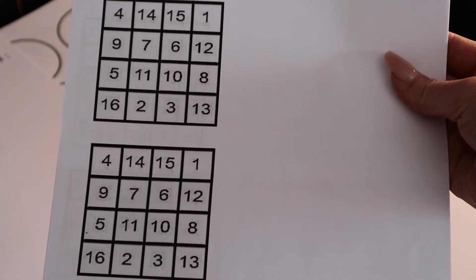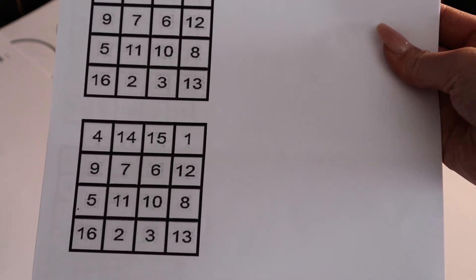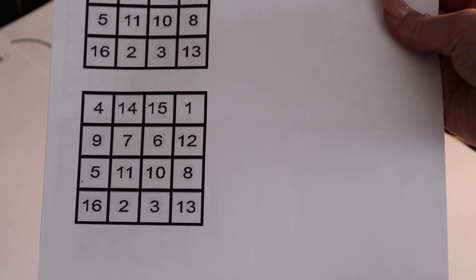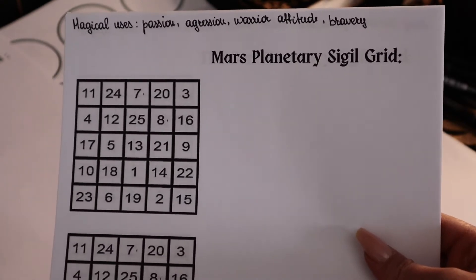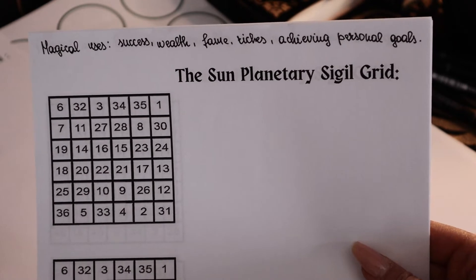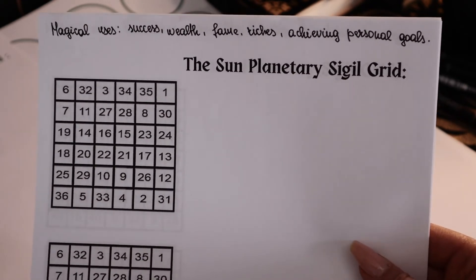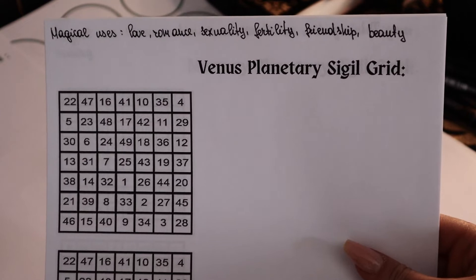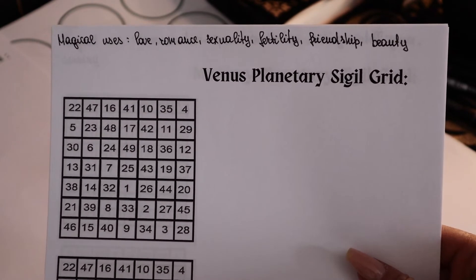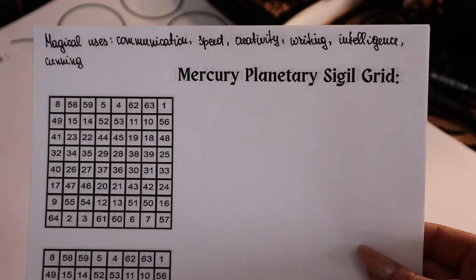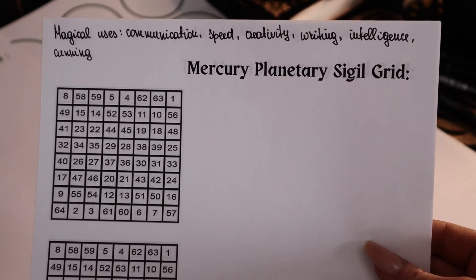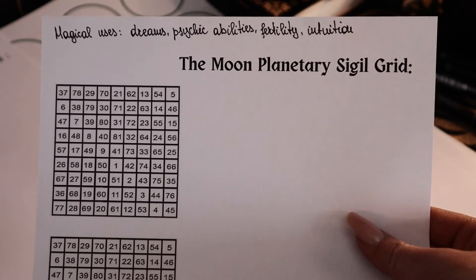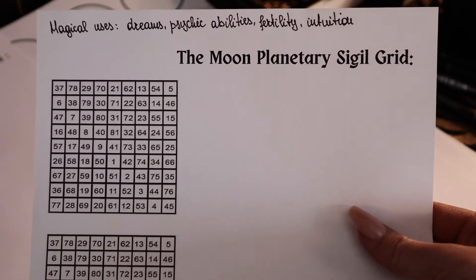There are other planetary grids that can be used for making sigils. Jupiter is all about prosperity, abundance, leadership, good health, and healing. The Sun is about success, wealth, fame, riches, achieving personal goals, good luck, and positivity. Venus is about love, romance, sexuality, fertility, friendship, and beauty. Mercury is about communication, speed, creativity, and intelligence. And the Moon is about dreams, psychic abilities, fertility, intuition, hidden secrets, and mystery.